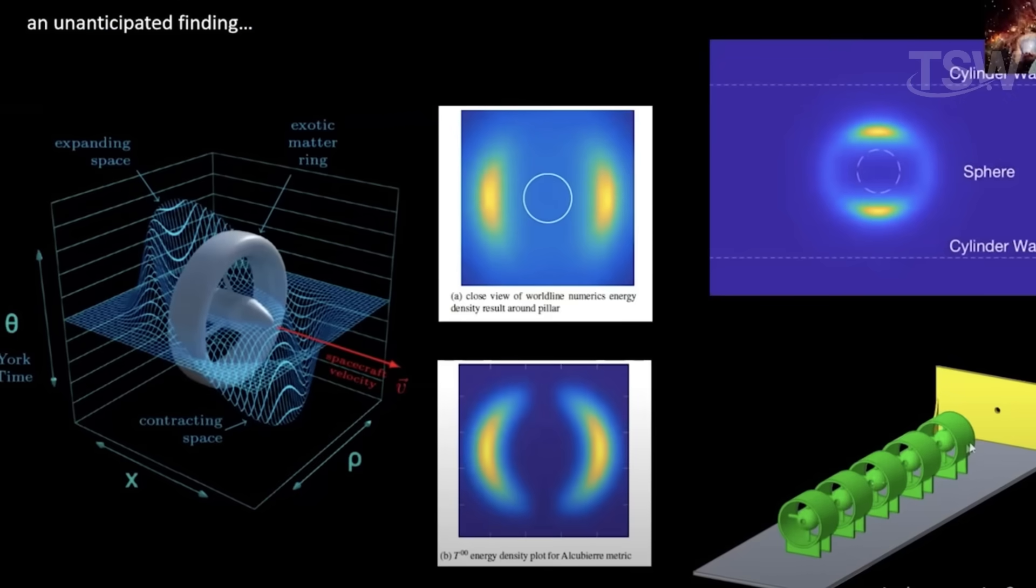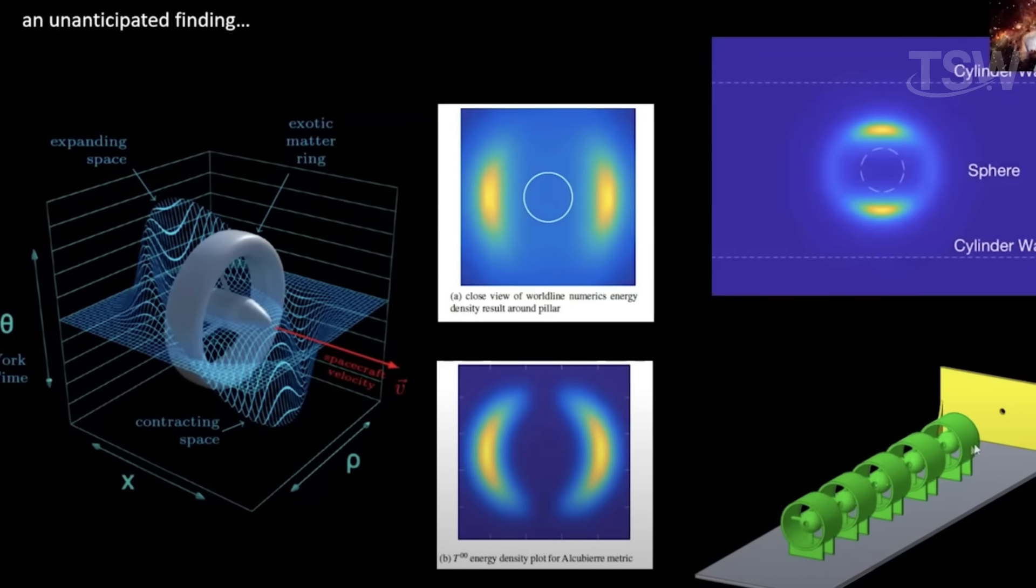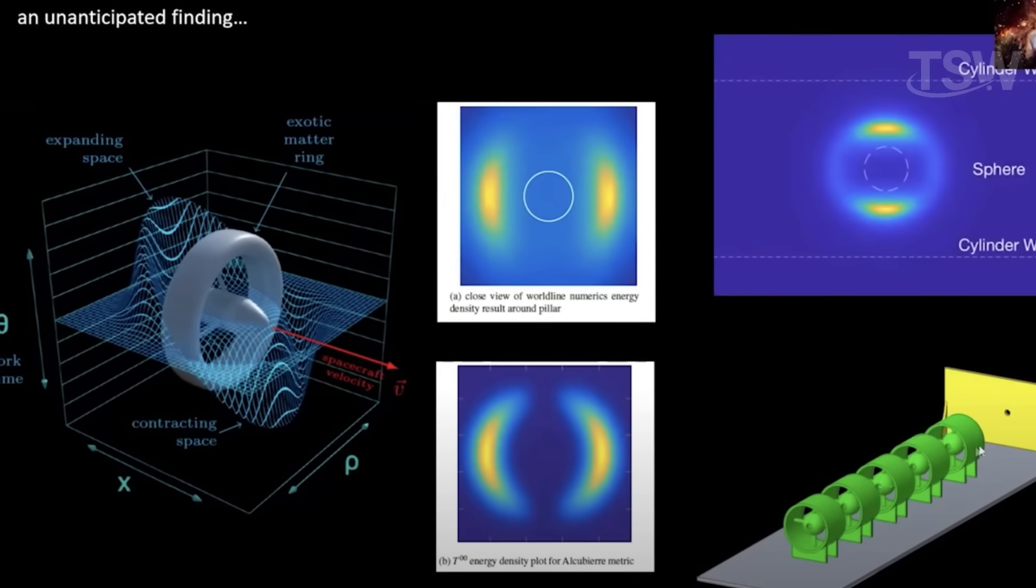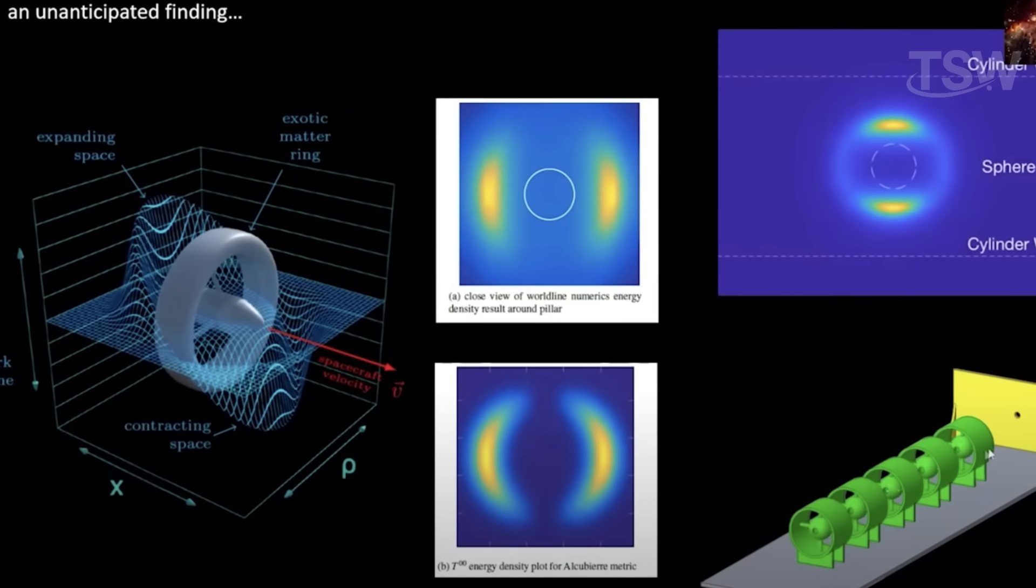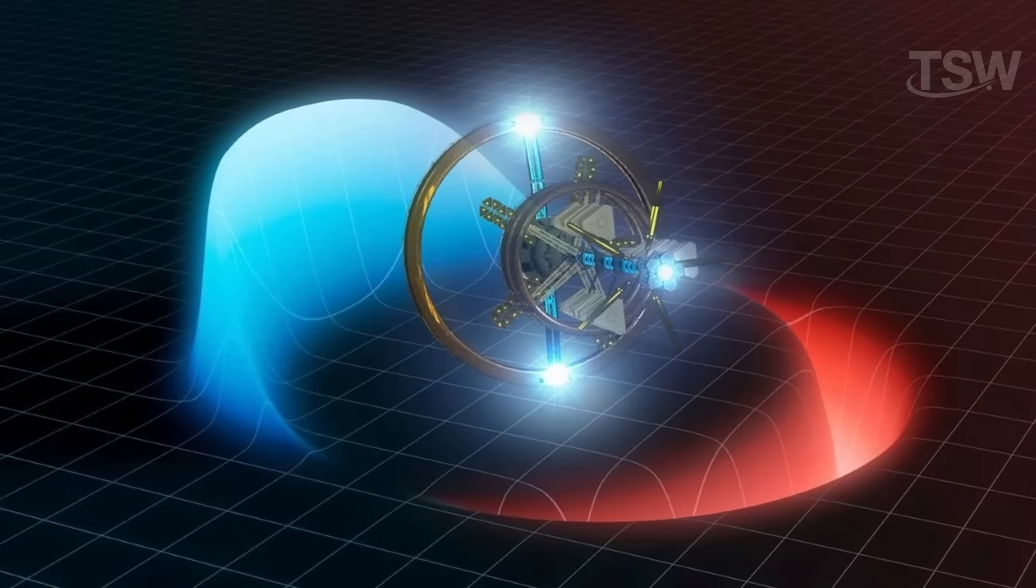In 2021, researchers actually created a theoretical model of a warp bubble that didn't require any negative mass at all. It was the first time a warp drive was proposed using only positive energy. Still theoretical, but a big shift from previous assumptions.